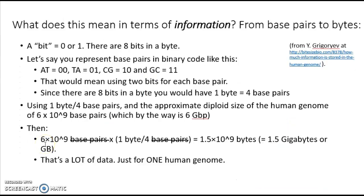So let's think about what this means in terms of information, in computing terms. Let's go from base pairs — a unit of information in DNA or in a genome — to bytes. A bit represents binary code: 0 or 1. There are 8 bits in a byte. A byte is a unit of information that can be stored computationally. So let's say we represent base pairs of DNA in binary code: AT is 00, TA is 01, CG is 10, and GC is 11. That means you use two bits of data for every one base pair.